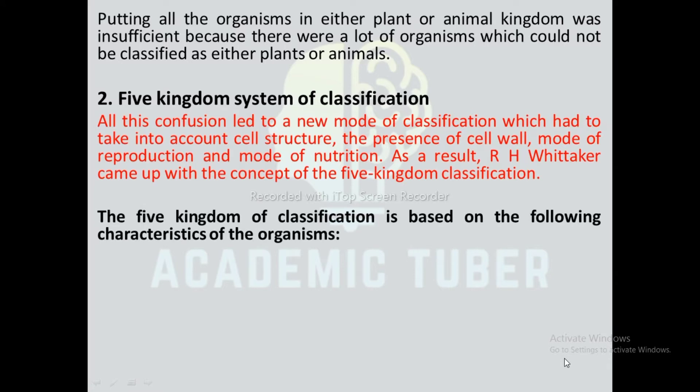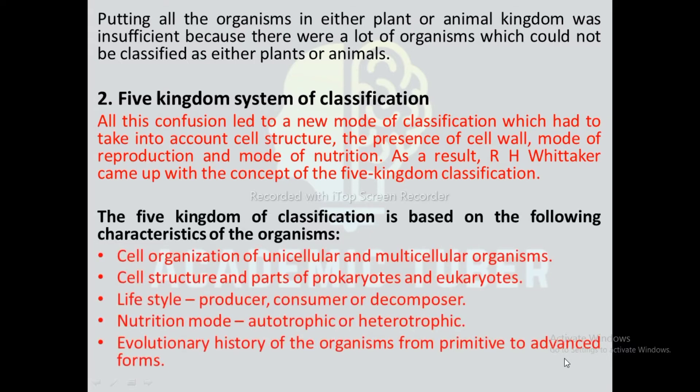The five kingdom system of classification is based on the following characteristics: cell organization of unicellular and multicellular organisms; cell structure and parts of prokaryotes and eukaryotes; lifestyle — producer, consumer or decomposer; nutrition mode — autotrophic or heterotrophic; and evolutionary history of the organism from primitive to advanced form.